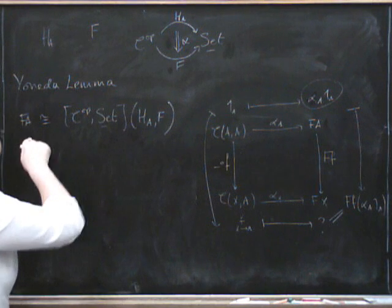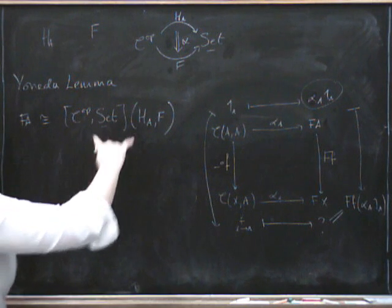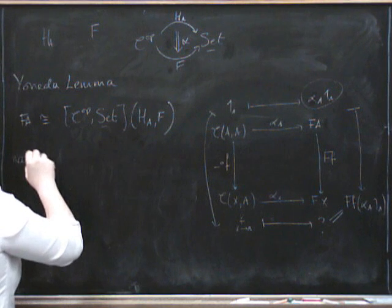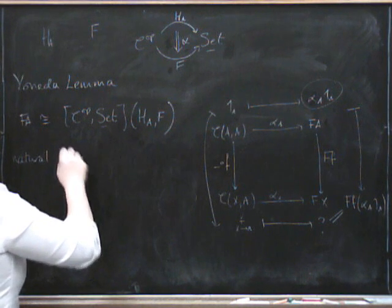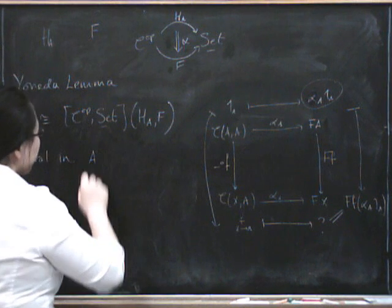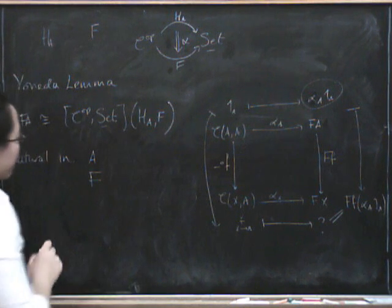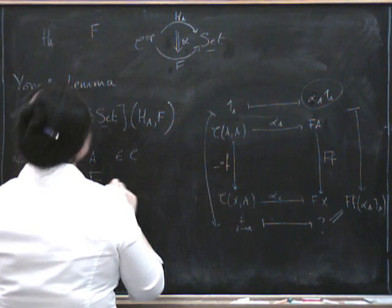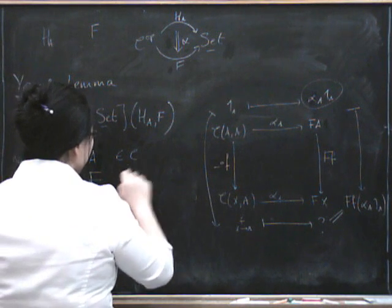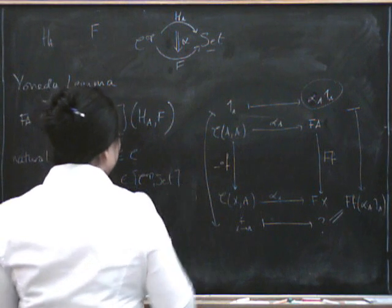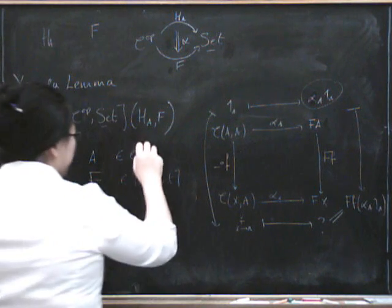So what this is, is it's a natural isomorphism between here and here. Natural, natural in what? It's natural in everything it could be natural in. It's natural in both the object A and F. So it's natural in A, so this is as an object of C, and it's natural in F as an object of C op set.